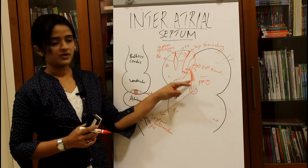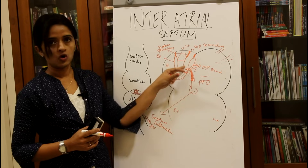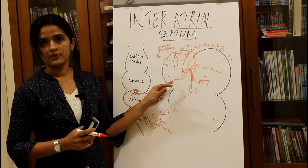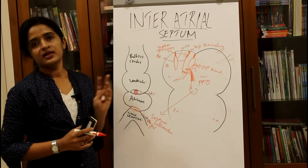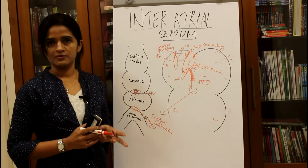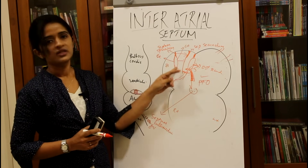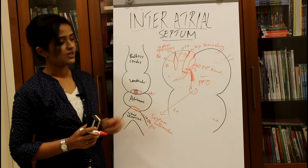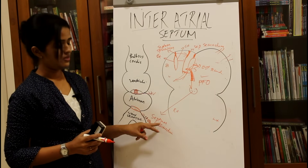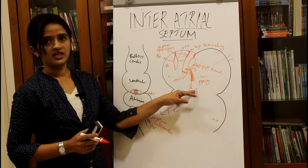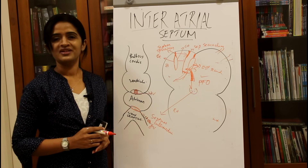To summarize, the three major defects of the inter-atrial septum are: ostium primum defect (septum primum doesn't meet septum intermedium), ostium secundum defect (septum secundum doesn't overlap ostium secundum), and patent foramen ovale (septum primum doesn't fuse with septum secundum after birth). The inter-atrial septum is formed from the septum primum and septum secundum, with contributions from the septum spurium and left sinus valve, and the atrioventricular cushions forming the septum intermedium which divides the atrioventricular canal into right and left tracts.